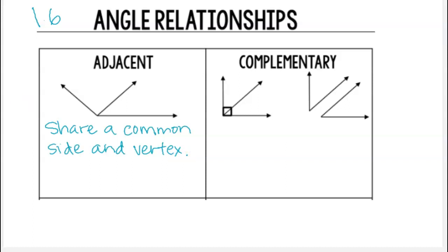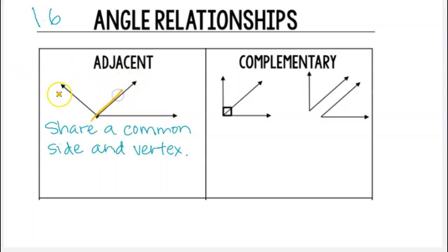We have two angles — one angle here and a second angle here — and the shared common side and vertex that they have is this vertex point here and this side. So let's go ahead and highlight our common side and vertex.